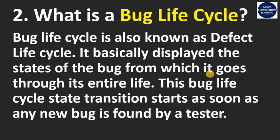So let's see what is a bug life cycle. A bug life cycle is also known as a defect life cycle. It basically displays the states of the bug through which it goes during its entire lifecycle.